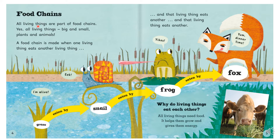Food chains. All living things are part of food chains — all living things, big and small, plants and animals. A food chain is made when one living thing eats another living thing. So here the grass is eaten by the snail. The snail is eaten by the frog. The frog is eaten by the fox.